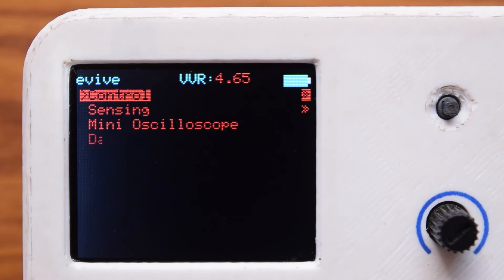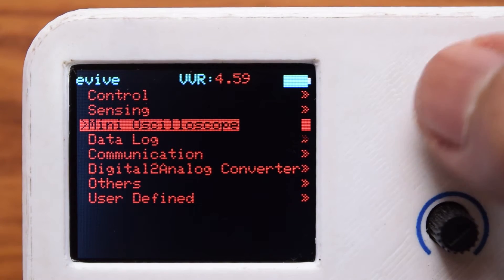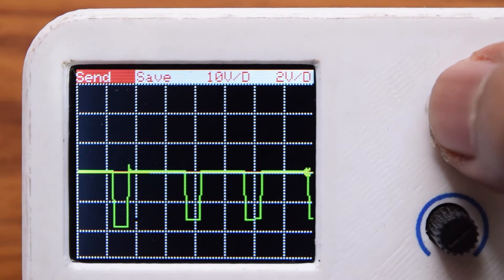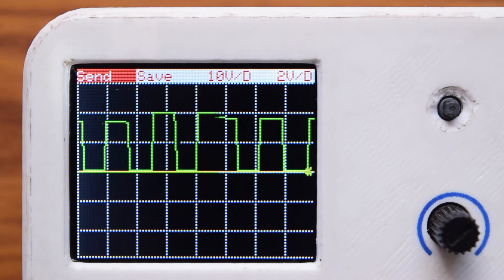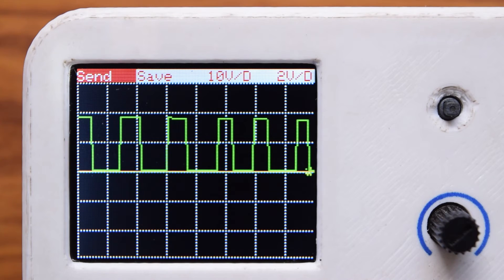evive has a dual channel mini oscilloscope made with a 24-bit analog to digital converter and capable of precisely sensing voltage in the range of minus 30 to plus 30 volts. It also has current sensing ranging from minus 3 to plus 3 amperes.